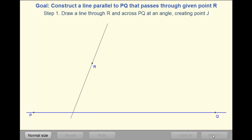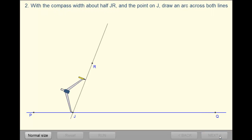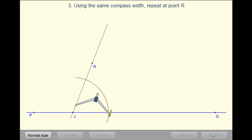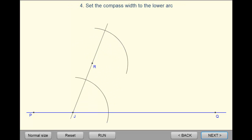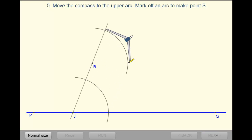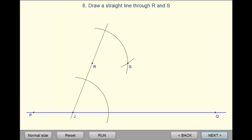We first draw a transversal, then you make an arc on the lower section, and make an arc of the same exact size on the upper section. Then you copy the width between these two points. Then you stab this point up here and make an arc. Then you connect R and S.